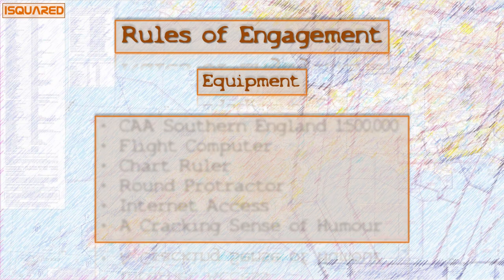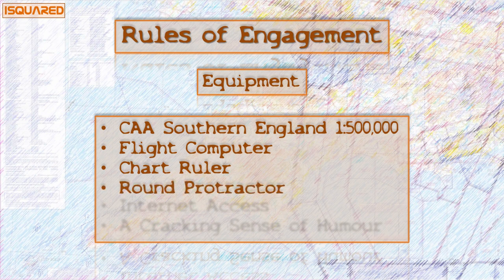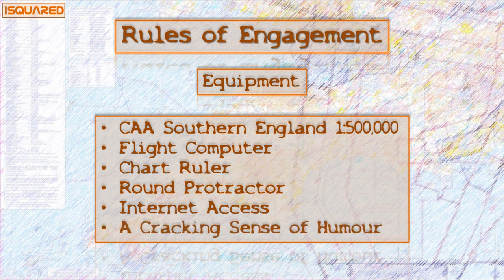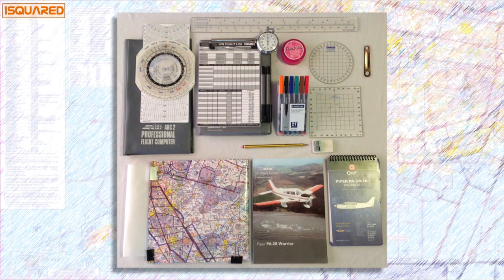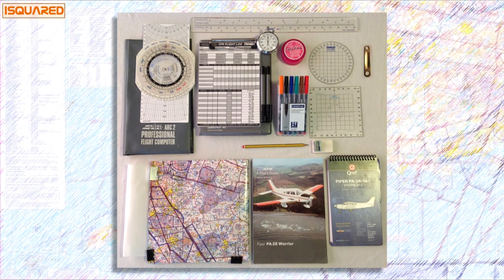Before we dive in let's make sure we've got everything we need: an up-to-date chart — we're using the CAA's half-mil southern England and Wales — a flight computer, a navigation ruler, and a full protractor. Access to the internet is essential for our research, and finally it helps to have a cracking sense of humour. I've also got nail polish remover pads as my eraser since I mark in permanent pen, and the reason for the bike spanner in the top right will become clear when we start plotting.